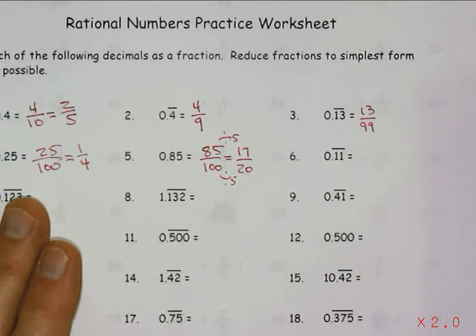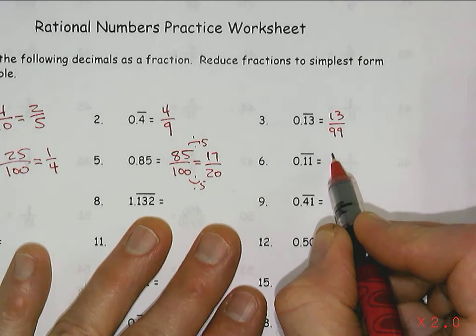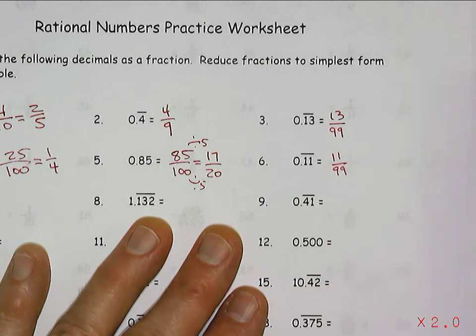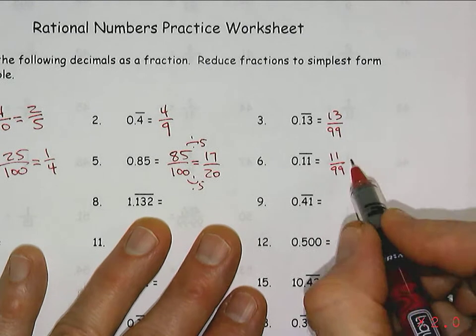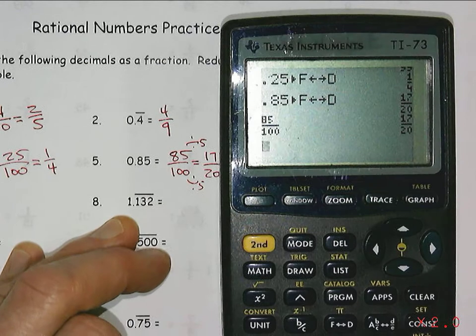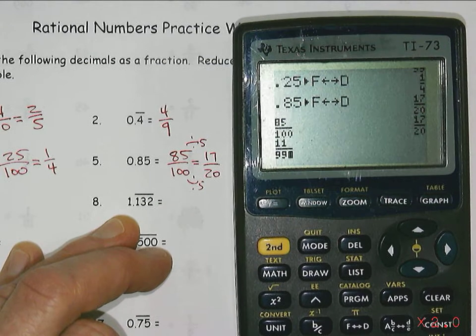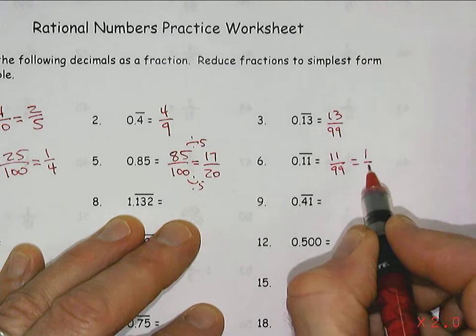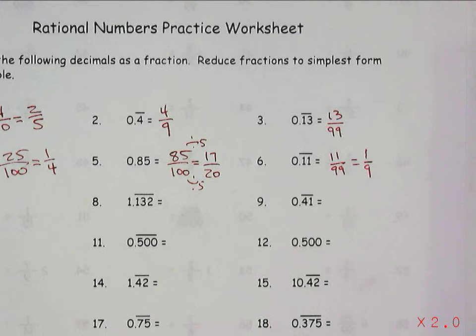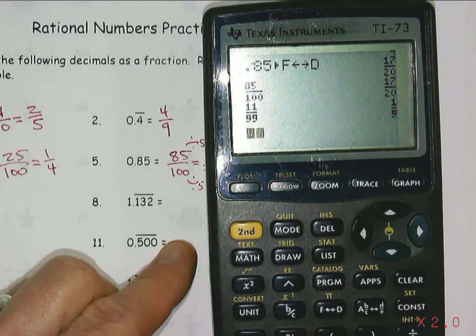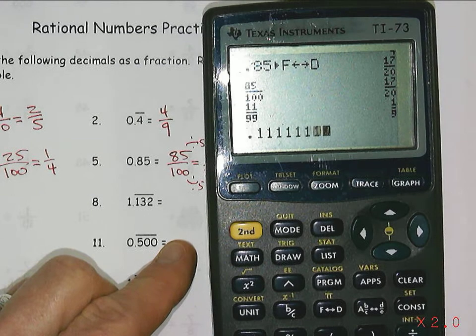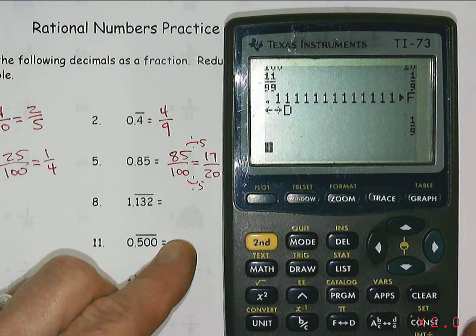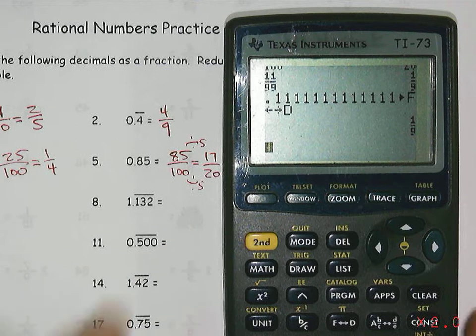And then, so this would be 11 over 99, which actually reduces, 11 over 99, to one-ninth. And again, if you didn't know that that was 11 over 99, just put in a bunch of ones and go fraction to decimal, and it gives me the one-ninth for that as well. So there's a few tricks you can use.